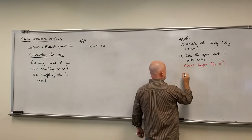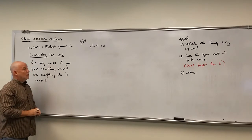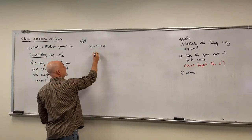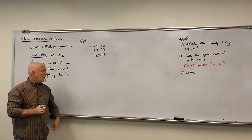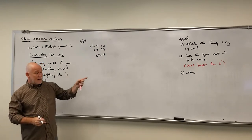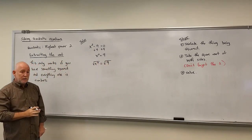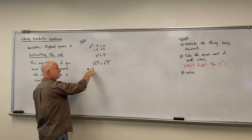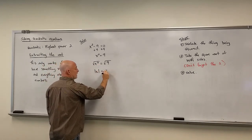Let's start with x² − 9 = 0. We can extract the root since we have something squared and everything else is numbers. First, isolate the thing being squared, so we get x² = 9. Now take the square root of both sides. Remember from roots and radicals: when you take the even root of something to the same even power, that's the absolute value, and the square root of 9 is 3.